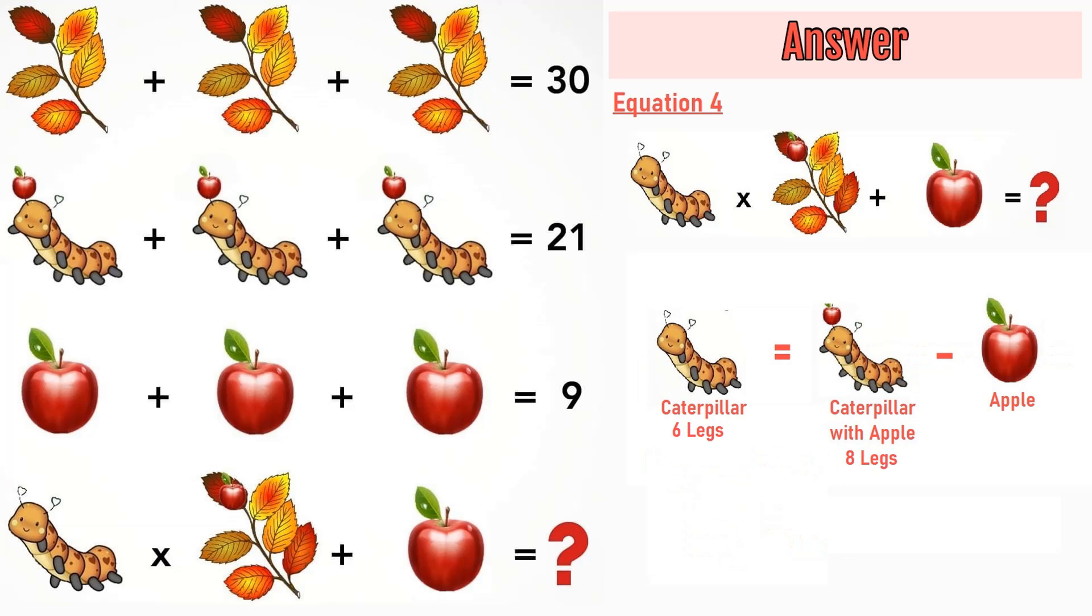A caterpillar with 6 legs is equal to a caterpillar with 8 legs reducing 2 legs and an apple minus an apple. So a caterpillar with 6 legs is equal to 6 minus 3 which is equal to 3.